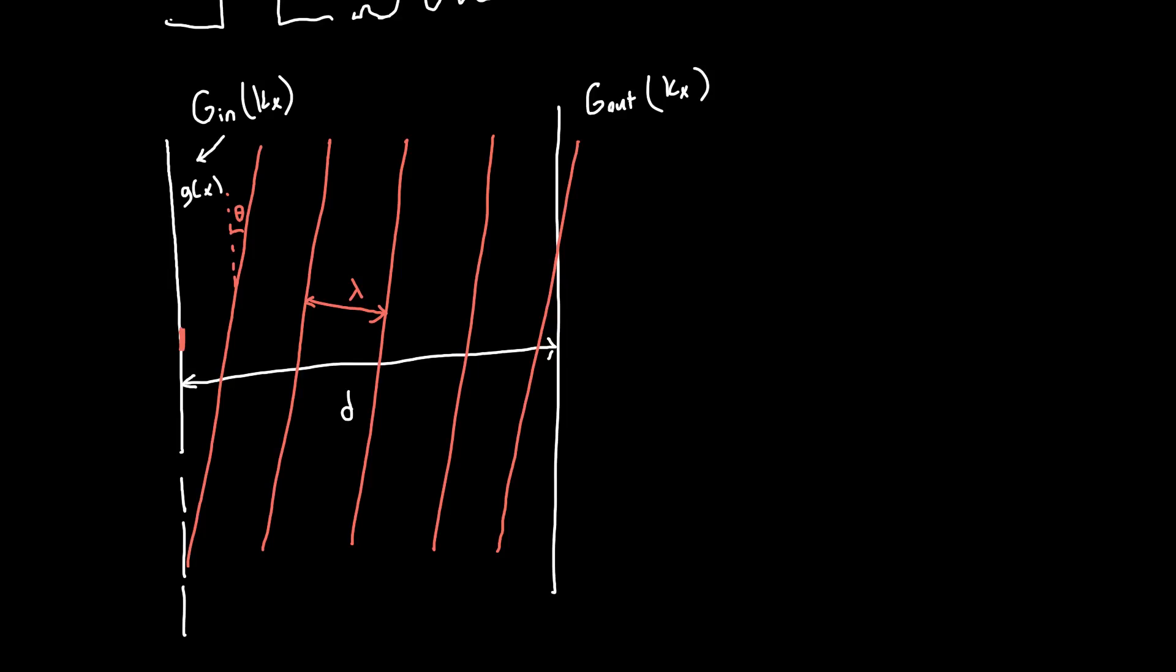And so we know that it's going to be propagating. If we want to figure out how g in transforms to g out, all we need to figure out is how some arbitrarily angled plane wave propagates from the input plane to the output plane. For some arbitrary kx value. So all we need to do is propagate a plane wave from this plane to this plane. And that's fairly straightforward. Because we can actually write out the equation for what a plane wave, how a plane wave behaves in space.